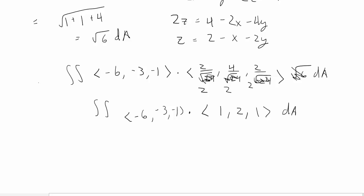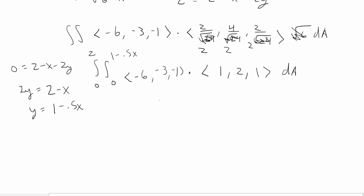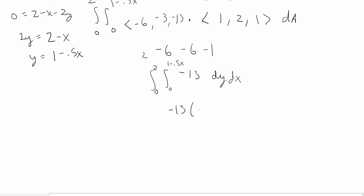The surface integral is straightforward. Setting z = 0 in the plane equation 0 = 2 − x − 2y gives the boundary. So y goes from 0 to 1 − 0.5x, and x goes from 0 to 2. Computing the dot product: (−6)(1) + (−3)(2) + (−1)(1) = −6 − 6 − 1 = −13. The integral becomes −13 times the double integral from 0 to 2 in x and 0 to 1 − 0.5x in y, dy dx.